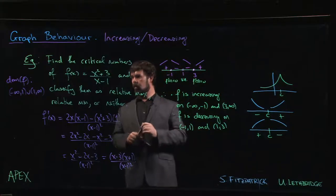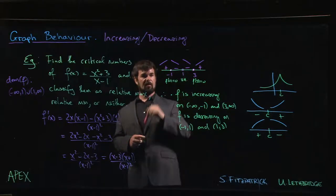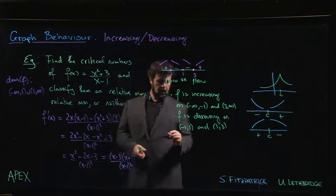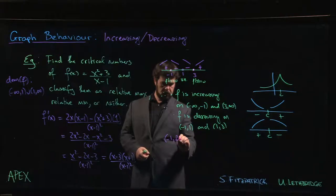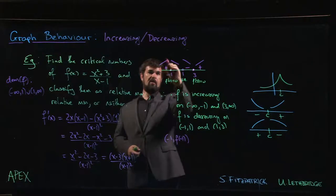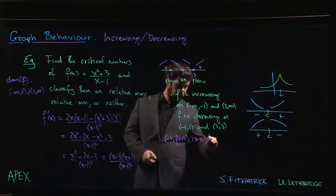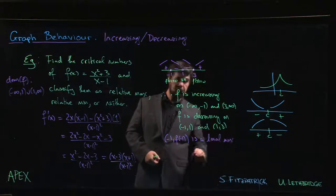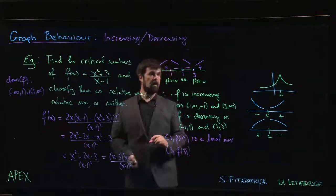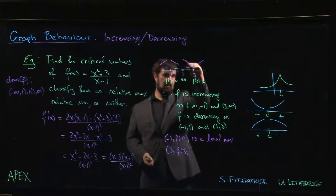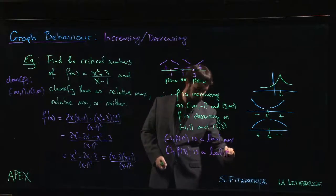And finally, we can classify the critical numbers. There are two critical numbers at minus 1 and 3. Remember, this is not a critical number because it's an asymptote. So we see that minus 1, f of minus 1, we change from increasing to decreasing. So that's a maximum. So that's a local max, relative max if you like. And at 3, f of 3, we go from decreasing to increasing. So that is a minimum.